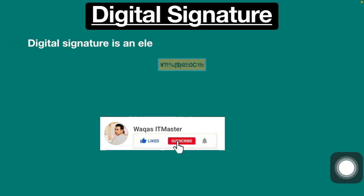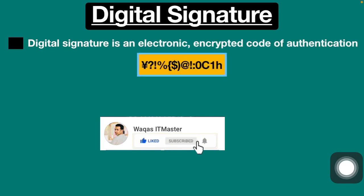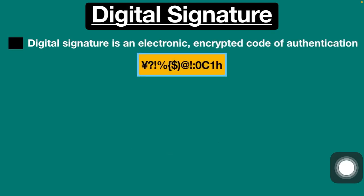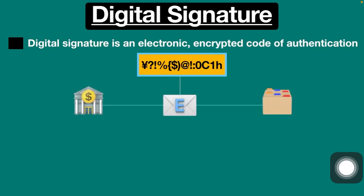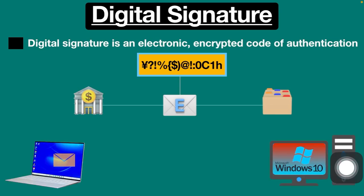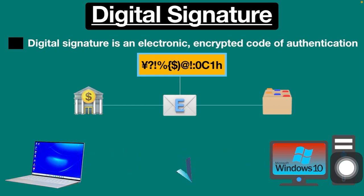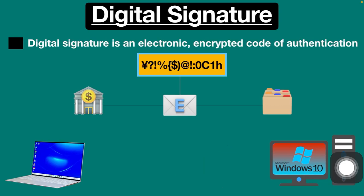A digital signature is an electronic encrypted code of authentication which is attached to digital information such as email messages, financial transactions, or electronic documents. This code, or signature, verifies and confirms that the information originated from the sender and is real and hasn't been changed in transit.